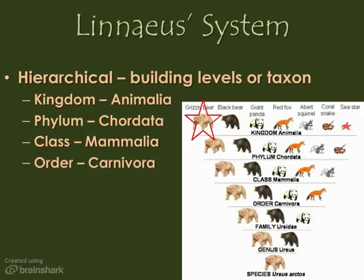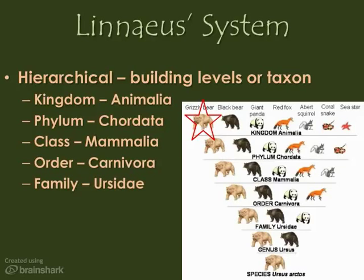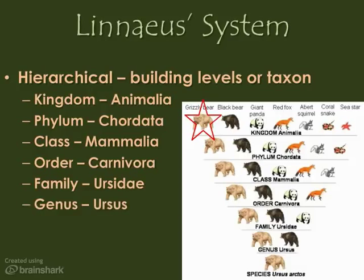Next, grizzlies have sharp pointed teeth, so this puts them in the order Carnivora. Sometimes words are misleading though — the word carnivore means meat-eater, but not all members of this order are meat-eaters. They are all characterized by sharp pointed canine teeth, as well as some other characteristics. The next level is family. The bear is in the family Ursidae. Members of this family have small rounded ears, a short tail, non-retractable claws, and they walk on the whole sole of their feet — we call that plantigrade.